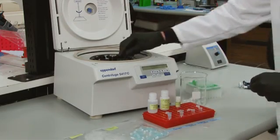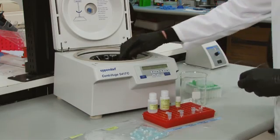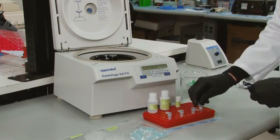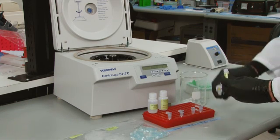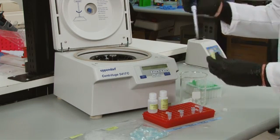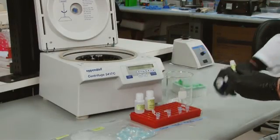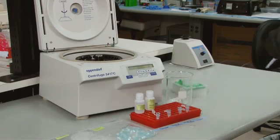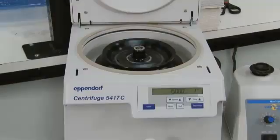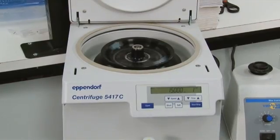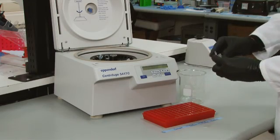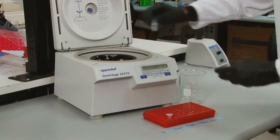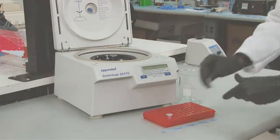Spin the empty columns at 15,000 G for 2 minutes to ensure that they are completely dry. Discard the old collection tube and place the purification column into a new, clean tube. Add 50 microliters of DNA elution buffer directly to the membrane in the column. Allow to sit for 1 minute. Then, perform a final spin at 15,000 G for 1 minute. Discard the purification column and save the purified DNA at minus 20 degrees Celsius until ready for the last phase.